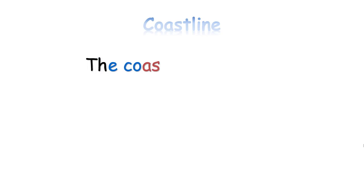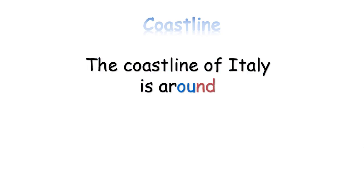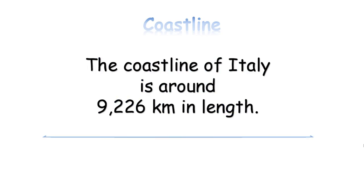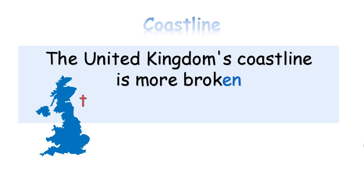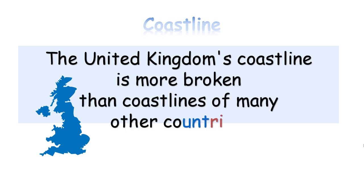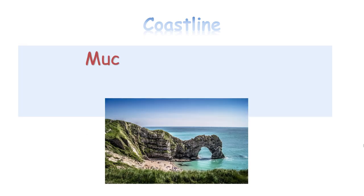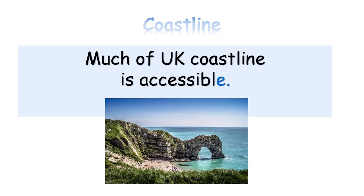The coastline of Italy is around 9,226 km in length. The United Kingdom's coastline is more broken than coastlines of many other countries. Much of UK coastline is accessible.